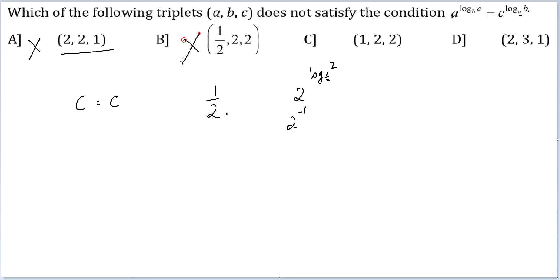So this also is satisfying the condition, won't be the answer. Let's look at option C: 1 raised to the power something, this is 1. LHS is 1. RHS is 2 raised to the power... You cannot have base 1. You cannot have base 1, so this is definitely a problem. This will not satisfy.